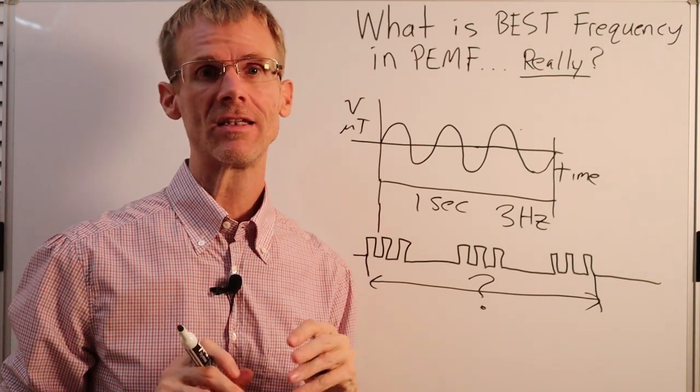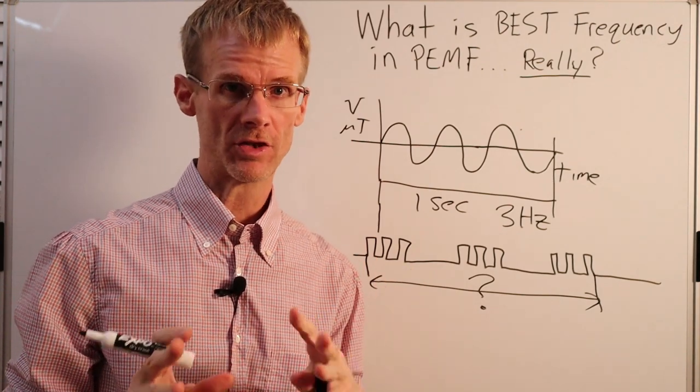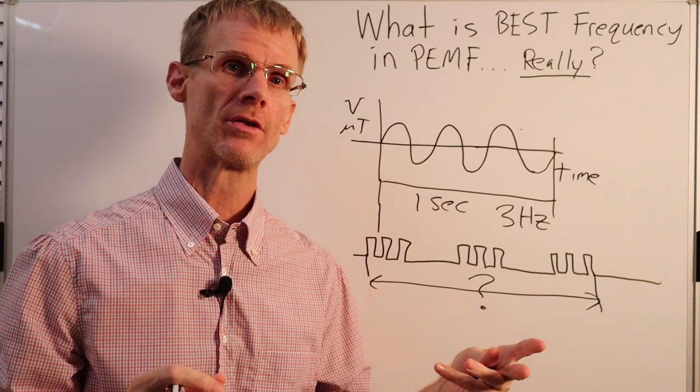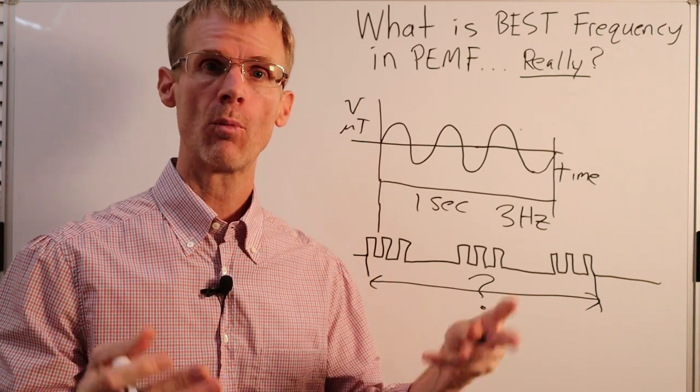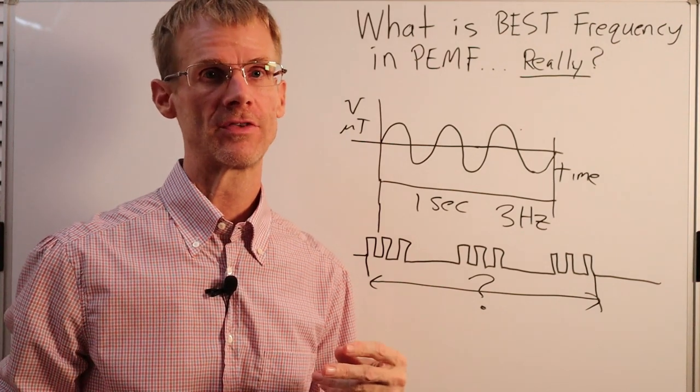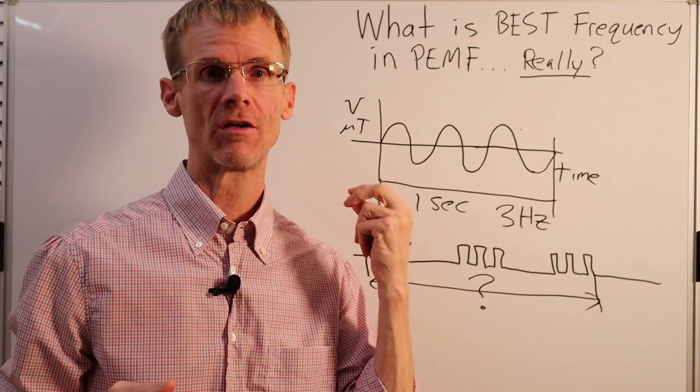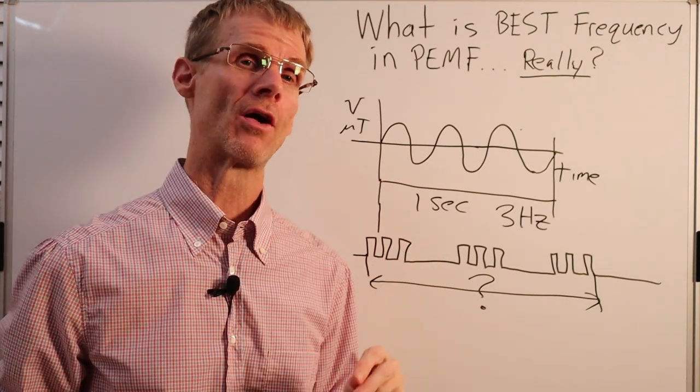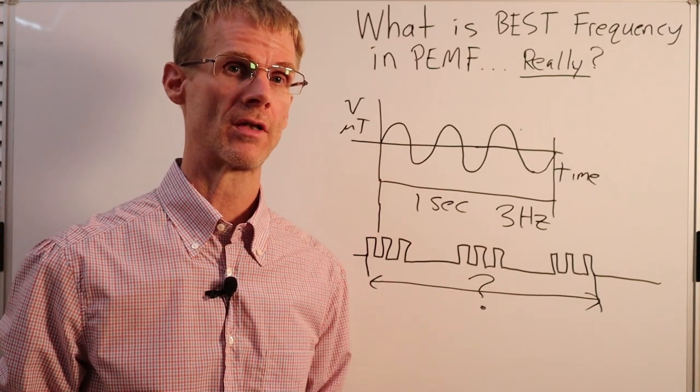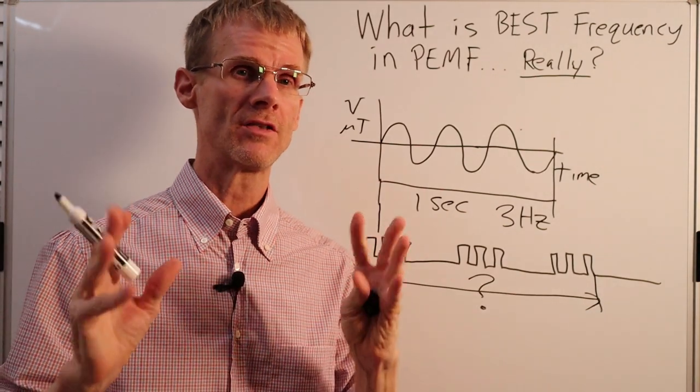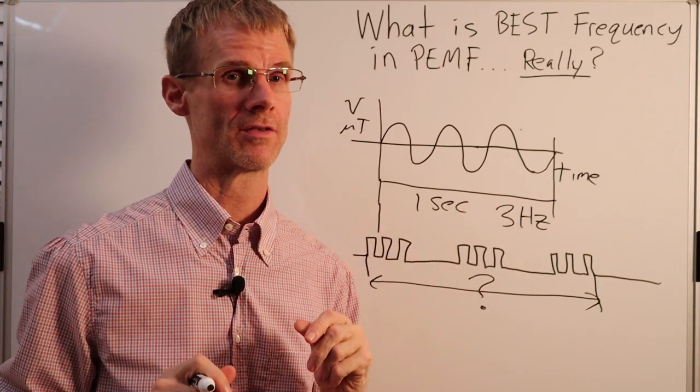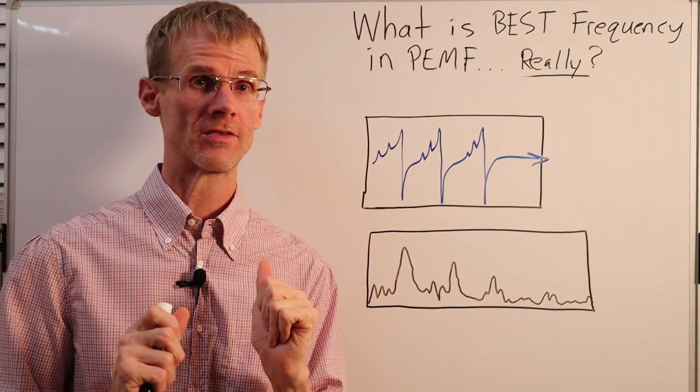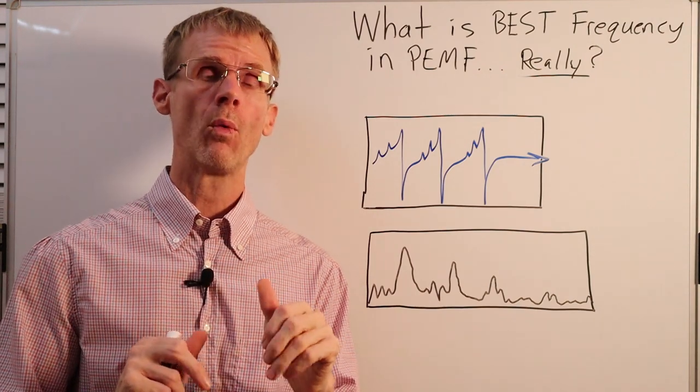In order to understand complex signals, we need to look at a field of engineering called signal processing. Signal processing is the investigation, interpretation, and manipulation of signals. A signal is simply a wave that transmits information and/or energy from one point to another. There are many examples of signals: radio, television, cell phone, music, voice, PEMF, and even earthquakes. Signal processing applies to many areas of science.